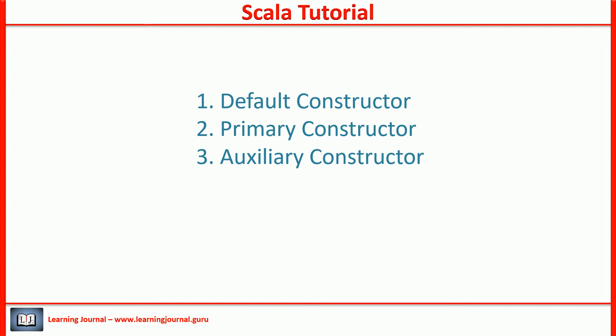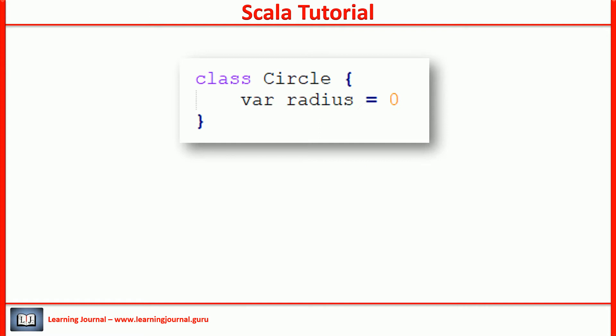Let's start with the default constructor. Every Scala class comes with a default primary constructor that doesn't take any argument. If you look at this example, you don't see a code for a constructor. We haven't defined any constructor. But there is a default constructor that doesn't take any argument. And that's why we can instantiate this class using an empty argument list.